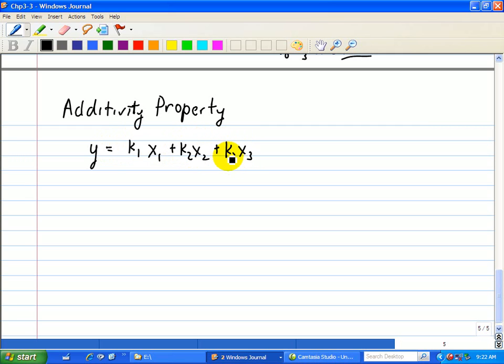Because of linearity, we can take each individual input and see what the individual output is. The output due to X1 is just Y1, the output due to X2 is just Y2, and the output due to X3 is just Y3. So the output is just the outputs due to each of the individual inputs.